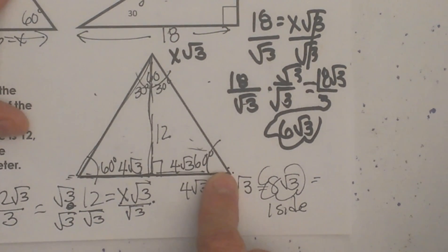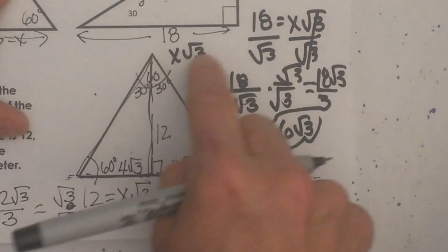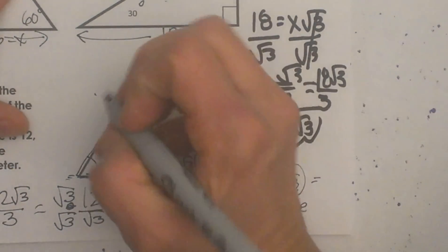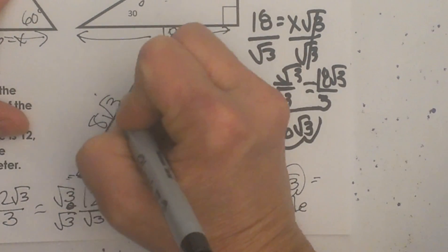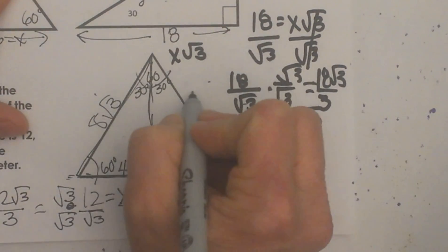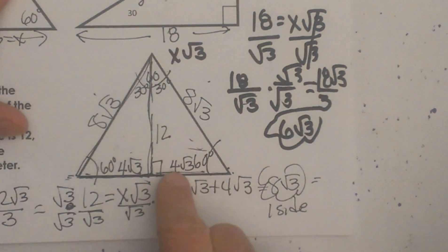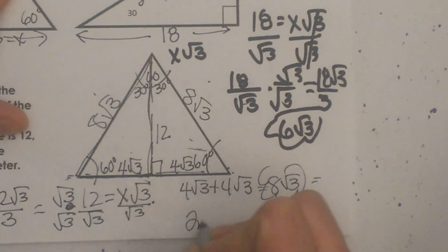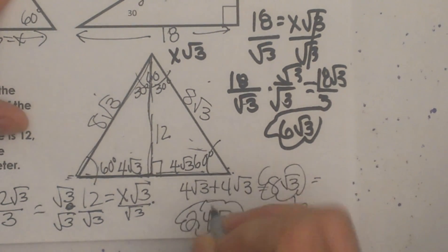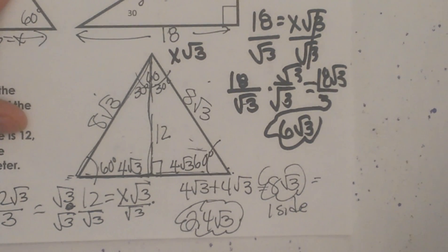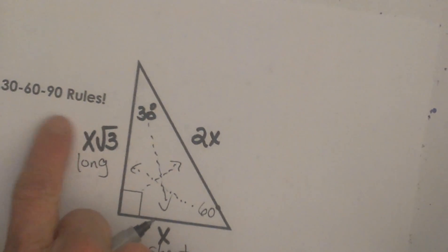This is an equilateral triangle, so all three sides are the same length — each side is 8 square root of 3. The perimeter is 8 square root of 3 plus 8 square root of 3 plus 8 square root of 3, which is 24 square root of 3. That is the perimeter of this equilateral triangle. Hope this video was helpful on learning tips for 30-60-90 rules.